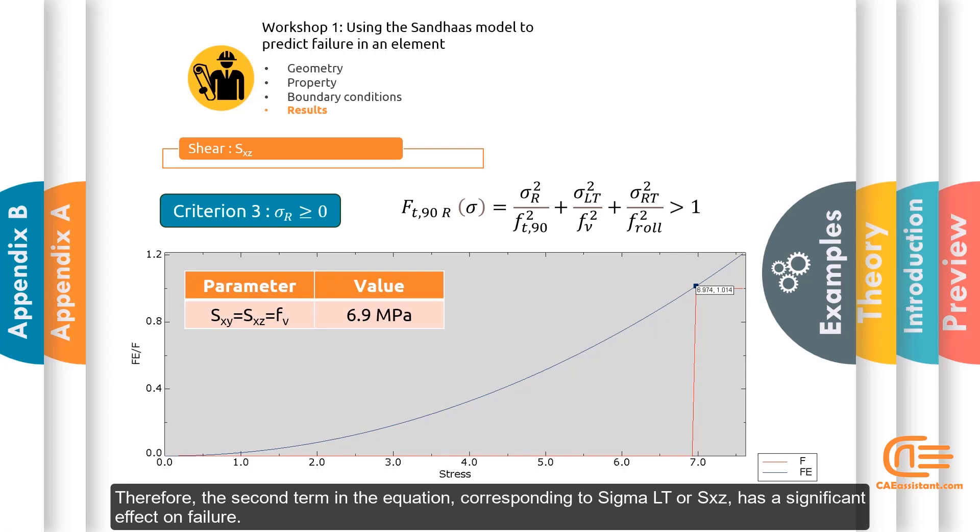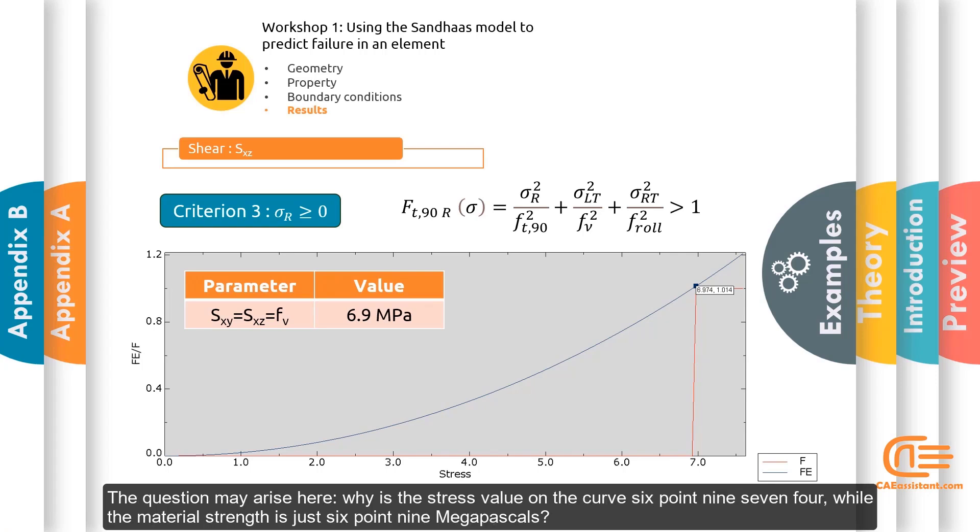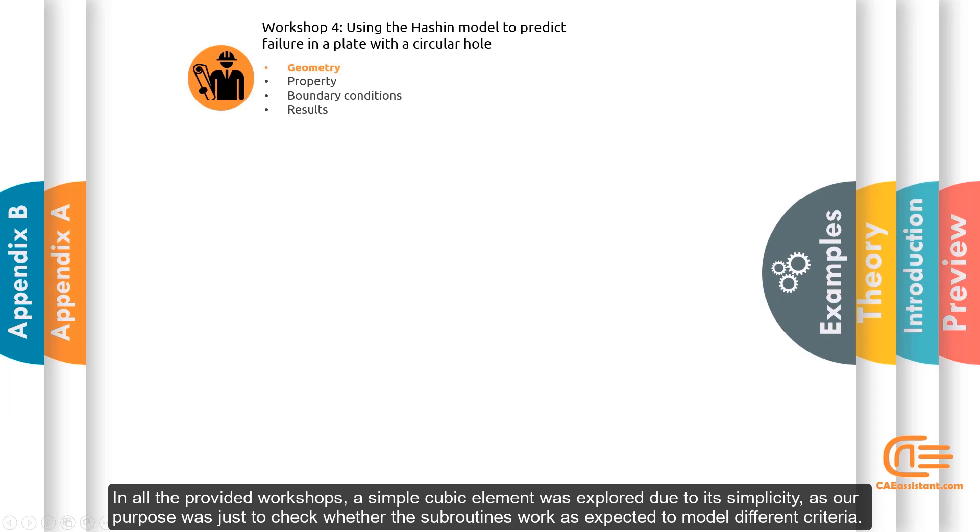Therefore, the second term in the equation corresponding to SGLT or SXZ has a significant effect on failure. In all the provided workshops, a simple cube element was explored due to its simplicity, as our purpose was just to check whether the subroutines work as expected to model different criteria.